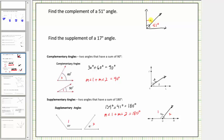Notice to find the complement of a 51 degree angle, we begin with 90 degrees and subtract 51 degrees, which gives us 39 degrees. The complement of a 51 degree angle is an angle that measures 39 degrees, because 39 degrees plus 51 degrees is equal to 90 degrees. So the complement of a 51 degree angle is a 39 degree angle.